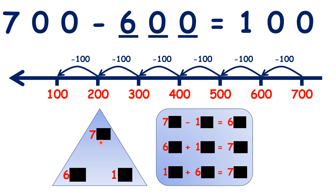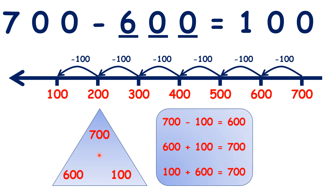We can see that because we have multiples of a hundred — 700, 600, and 100 — our number family facts are similar to our facts for 7, 6, and 1. So we can just use that simpler example to help us.